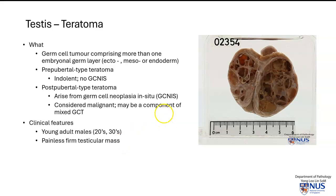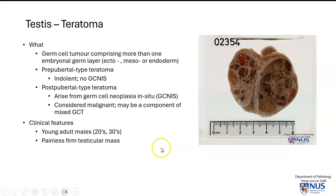Clinically, this usually affects young adult males in their 20s to 30s, and this will present as a painless firm testicular mass. Take note that even though the names are prepubertal and postpubertal type, either one can really occur in any age group.